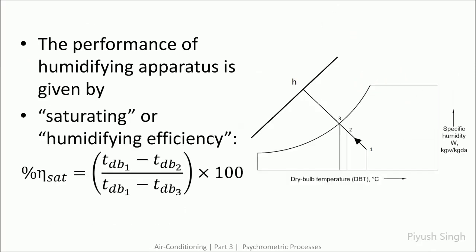The performance of a humidifying apparatus is given by saturating or humidifying efficiency. TdB1 is the temperature of the incoming air, TdB2 is the temperature of the outlet condition, and TdB3 is the temperature at saturation. The total desired drop in temperature was TdB1 minus TdB3, but what could be achieved was TdB1 minus TdB2. Hence, the saturation efficiency is given by the ratio of these quantities multiplied by 100.